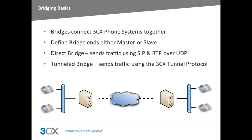A bridge connection may be created in one of two modes: the first using regular SIP and RTP over UDP, and the second using the 3CX tunnel protocol. This simplifies NAT traversal challenges and also saves on bandwidth when multiple calls are being delivered over the tunnel.